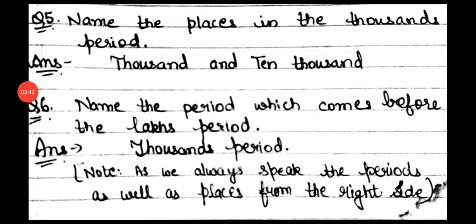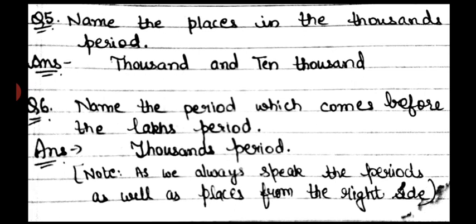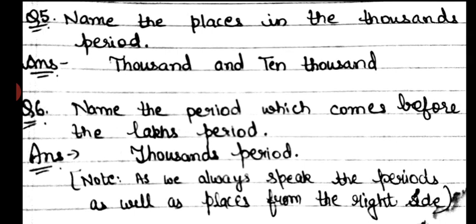Question number 5: name the places in the thousands period. As we have already discussed, in the Indian place value system we have 3 periods: ones, thousands, and lakhs. Under the ones period we have ones, tens, hundreds. Under the thousands period we have thousands and ten thousands. And that's our answer.